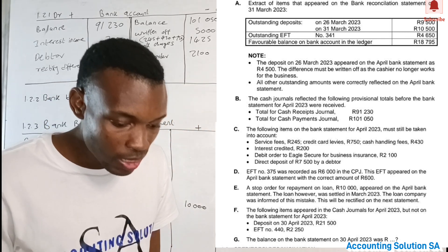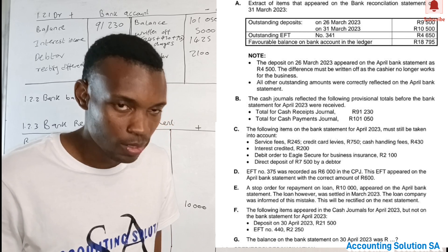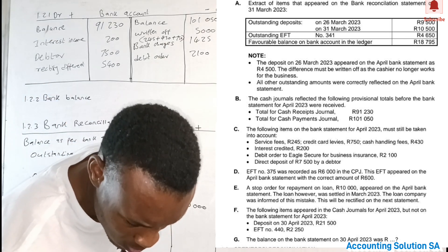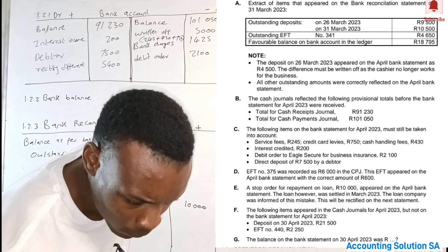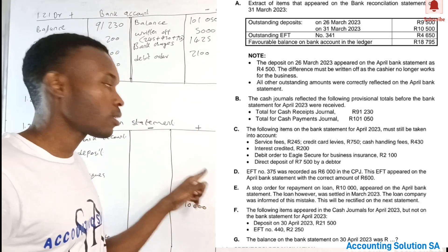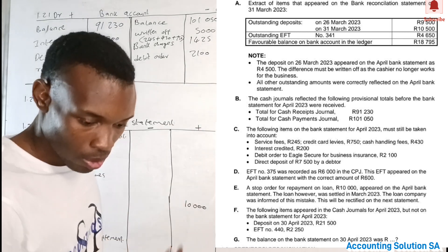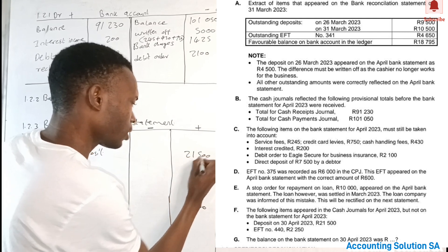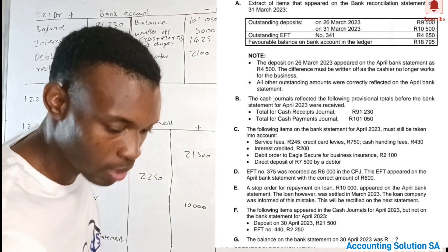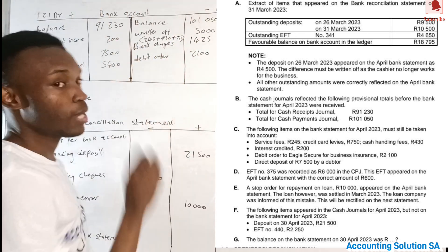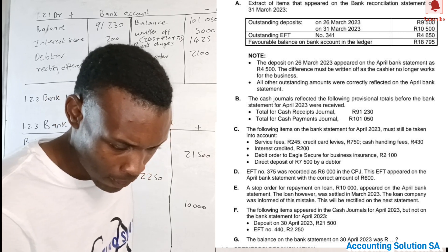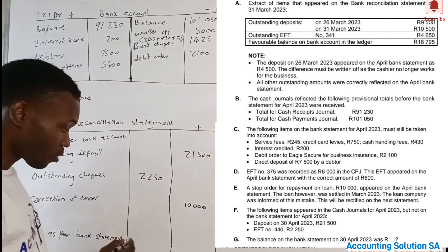Number F: the following items appear in the cash journal for April but not on the bank statement, which means we have to come to the bank statement side and do the right thing. We have a deposit of 21,000 and an EFT of 2,250. The outstanding deposit comes to the credit side because it's a positive, while the outstanding check is a payment so it's a minus. As long as you're familiar with this principle of plus and minus, you'll get it right.